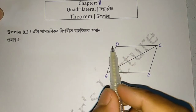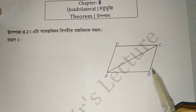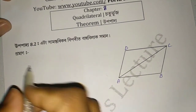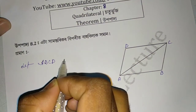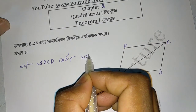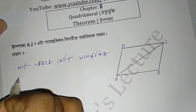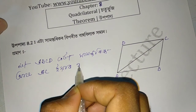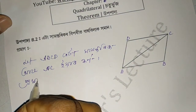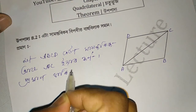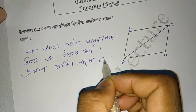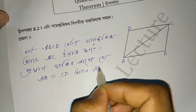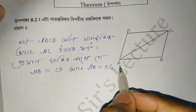Let's start from A. AB equal to DC, AD equal to BC. Row AD equal to BC, that's how we call it.